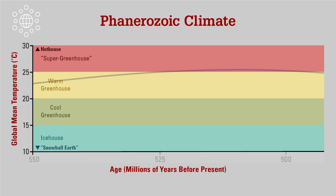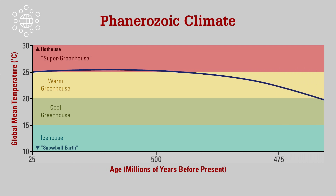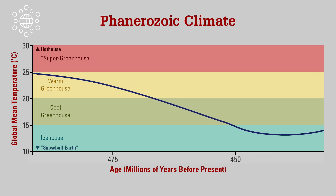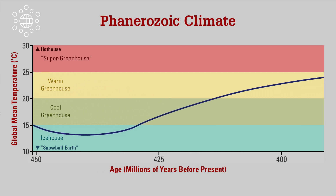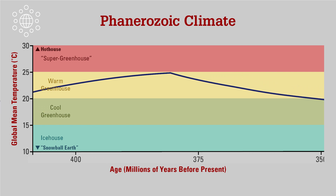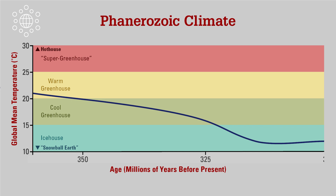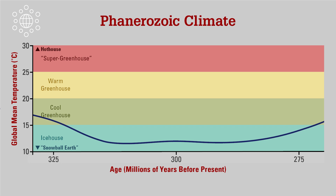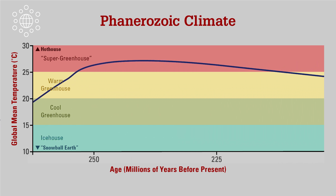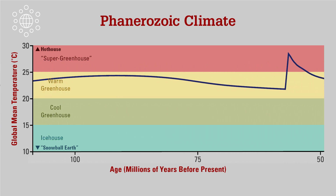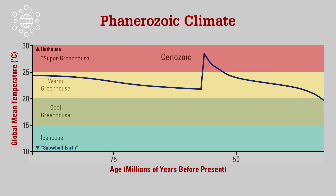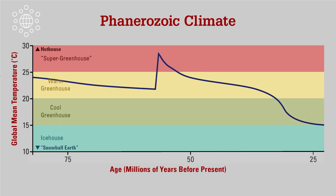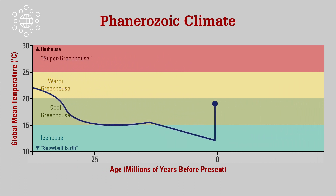Global climate has shifted between these states at various points, and may at some points have even approached what we consider runaway conditions on either end — effectively the threshold at which our planet becomes either permanently ice-covered, known as snowball Earth, or permanently superheated, known as hothouse Earth, which is similar to the conditions on Venus. Within the overall record, we can also note some particular trends of interest, like the significant cooling during the late Paleozoic around 300 million years ago, the extreme warming at the beginning of the Cenozoic around 55 million years ago, and the overall cooling and alternating trend during the Quaternary, or the last couple million years.